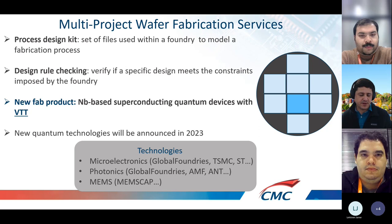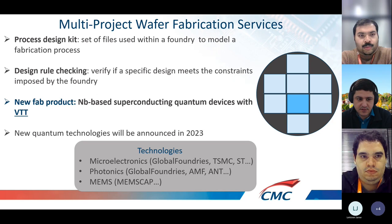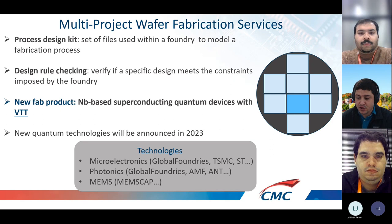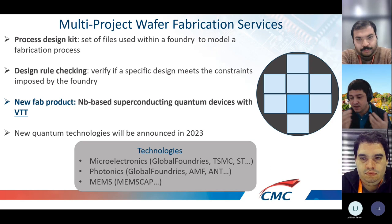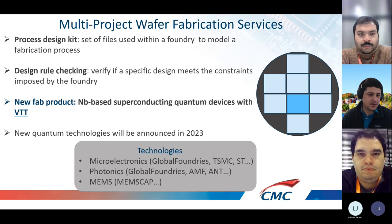On the fabrication side, we provide fabrication services through our multi-project wafer program. CMC buys the full wafer or the minimum area required by the foundry, such as VTT. Our clients only buy the design area they need, which is very cost-effective for academics and SMEs to prototype. Once you're ready for commercialization or have a high TRL product, you can contract directly with the foundry and move to larger-scale fabrication.